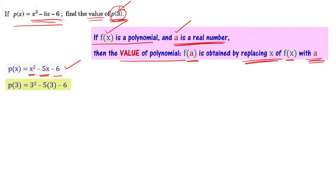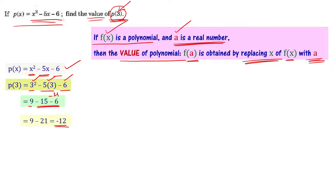p of 3 equals 3 squared minus 5 times 3 minus 6. That gives us 9 minus 15 minus 6, which equals 9 minus 21, and that equals minus 12. So the value of p of 3 is minus 12.